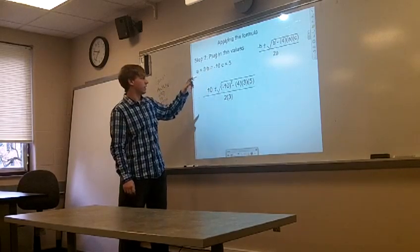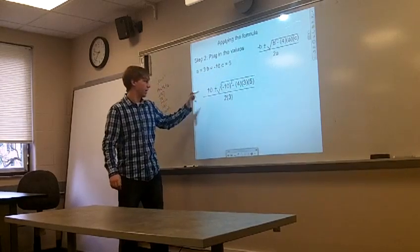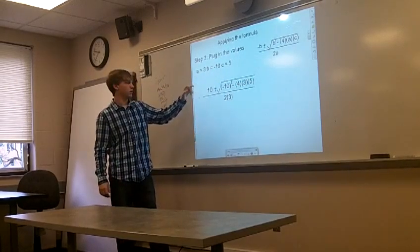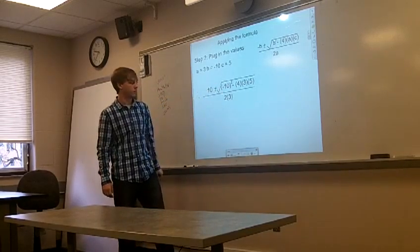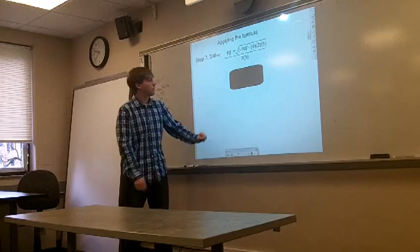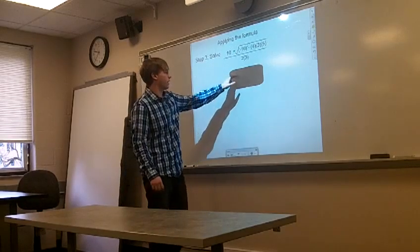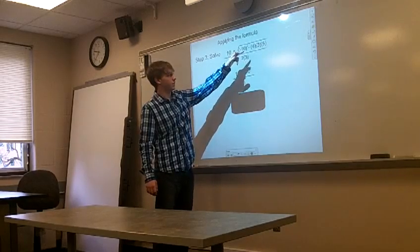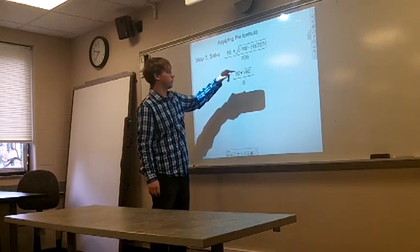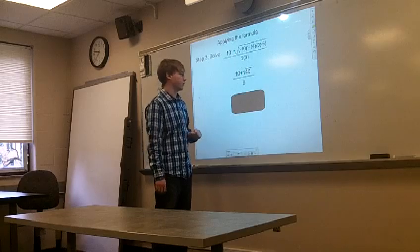So you'd have negative 10, but it's the opposite. So you have positive 10 plus or minus the square root of 10 squared minus 4 times 3 times 5, all over 2 times 3. And when you do your math, you're going to get 10 plus or minus the square root of 100 minus 60, which is 40. So square root of 40, all over 2 times 3, which is 6.